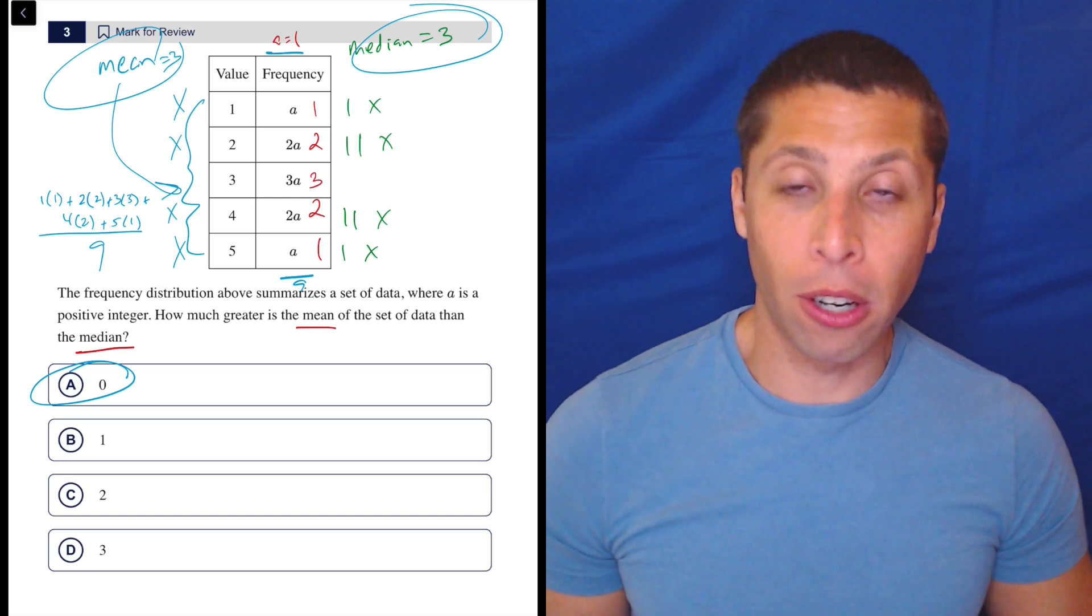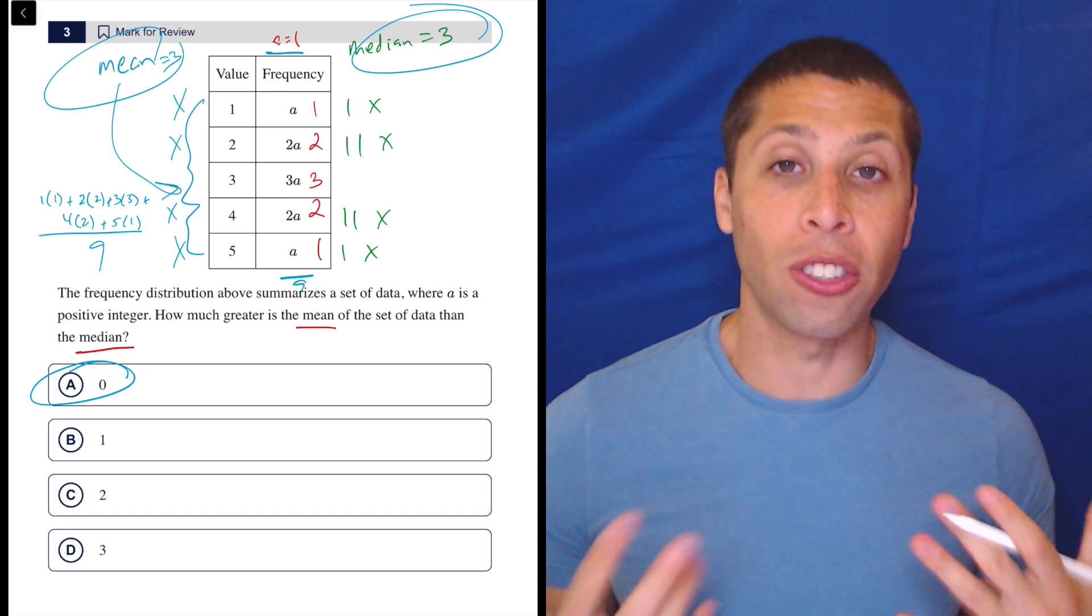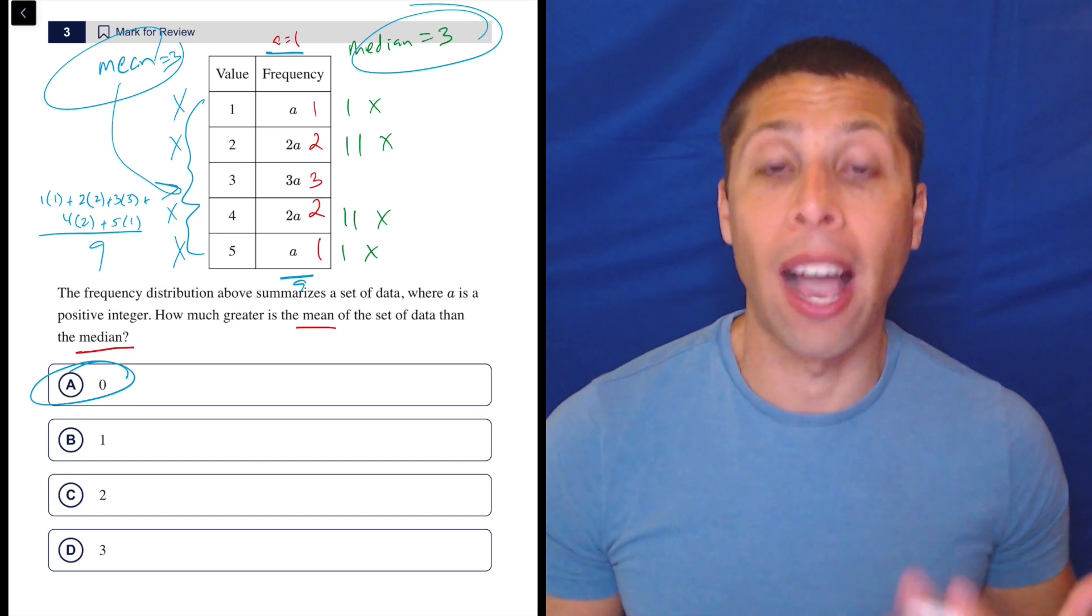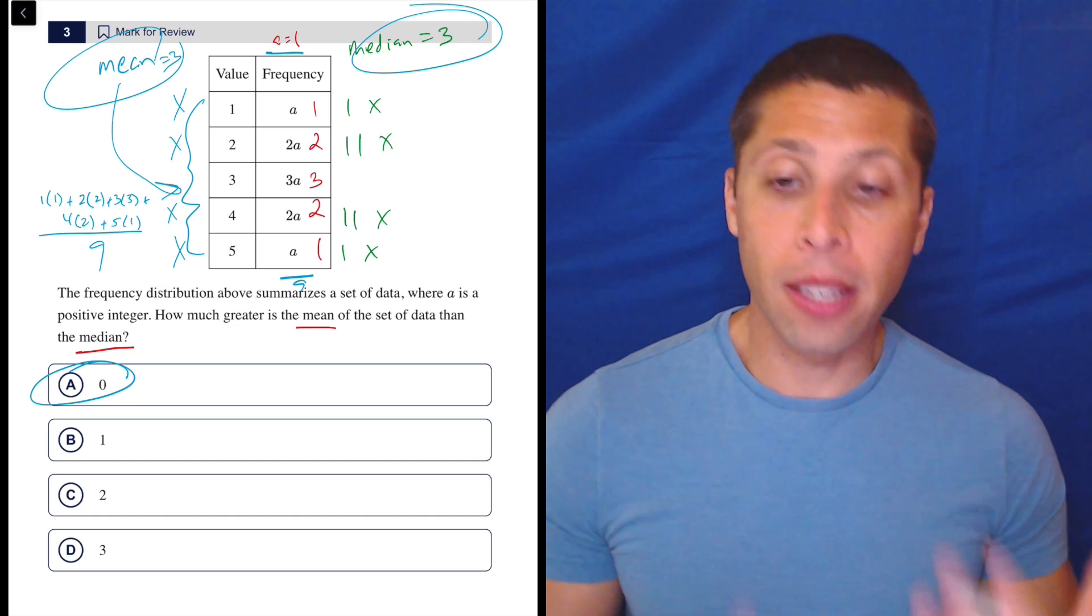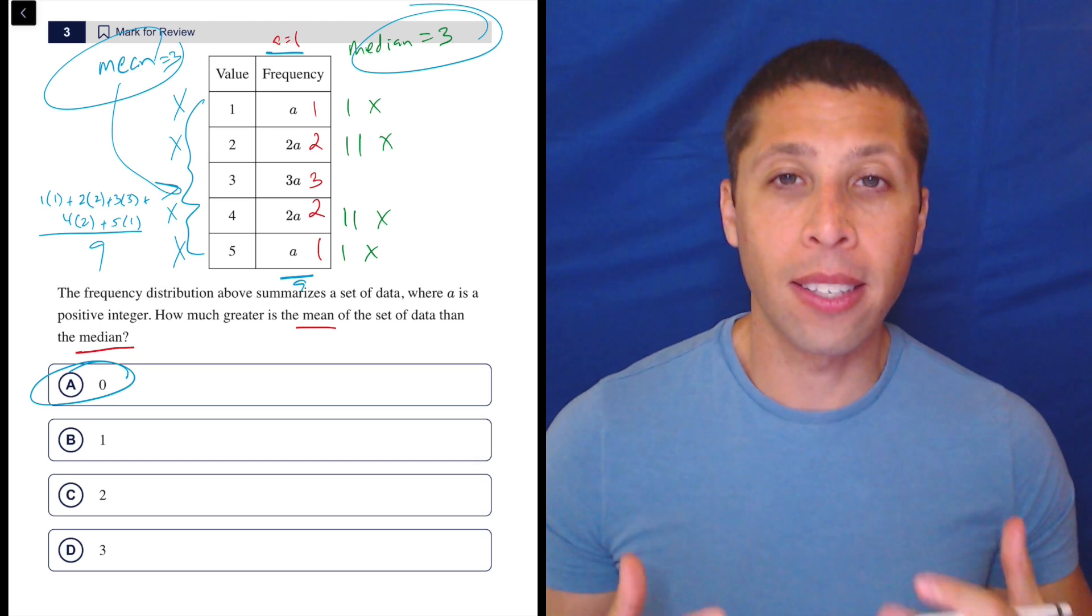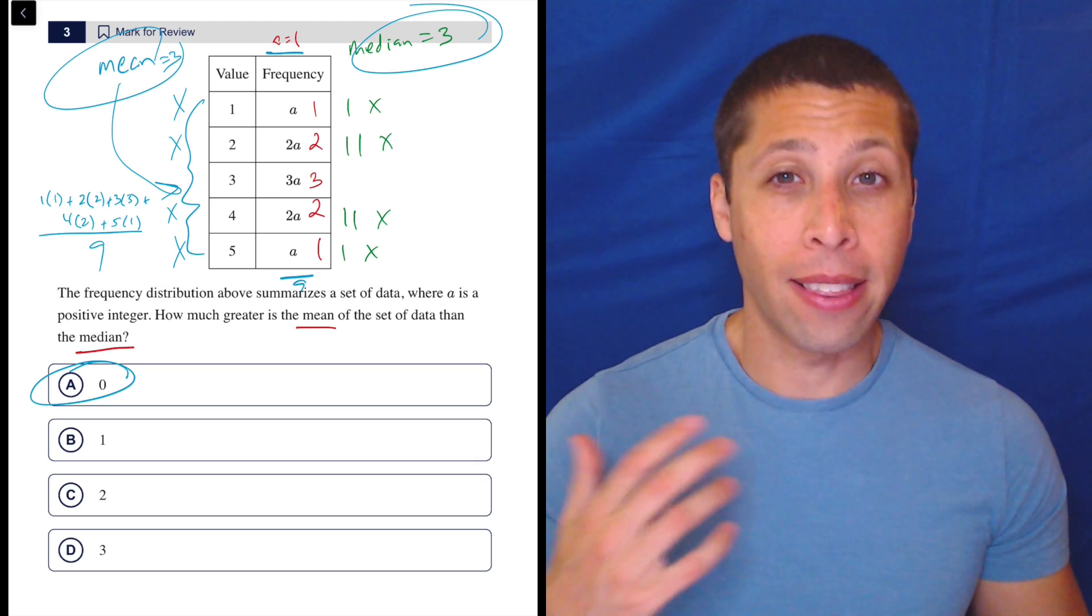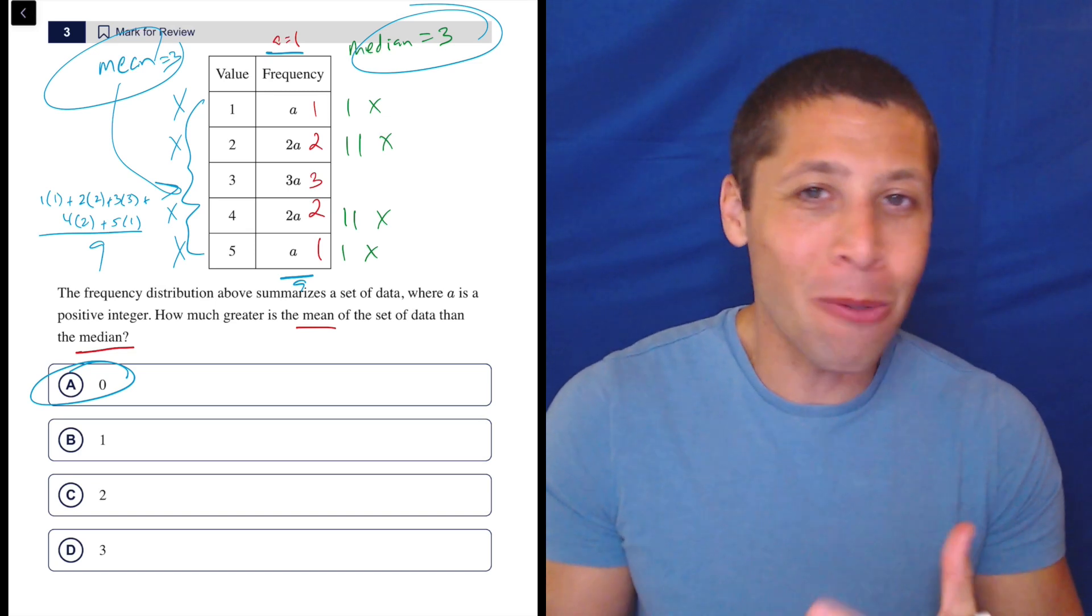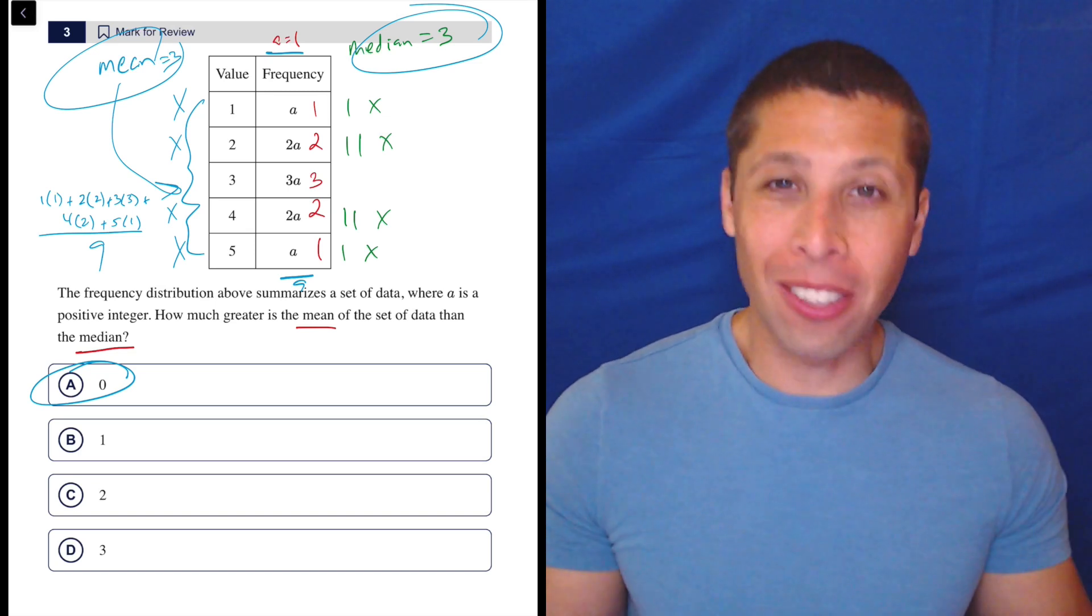Calculate it if you need to. But in a lot of hard statistics questions, they're hoping that we understand how things change without having to actually do the calculation every time. In this case, you want to understand very quickly that this is a set that's very well balanced, that there's the same kind of number of each value on either side. Hopefully, this just makes sense.